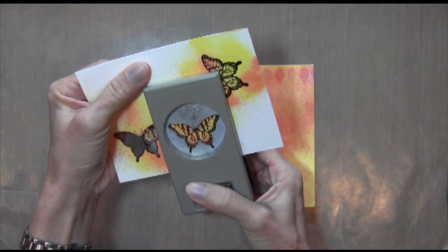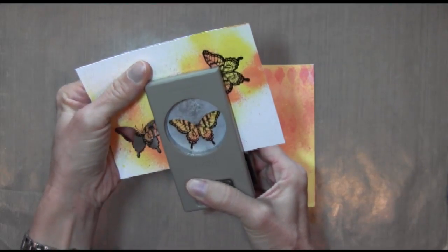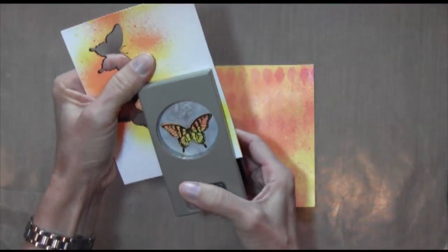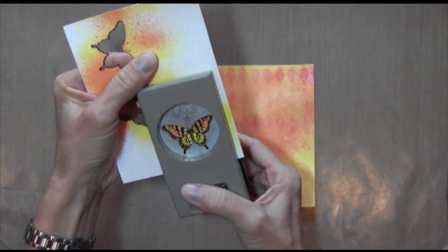There's this matching Stampin' Up punch for this butterfly set, and it's great because the punch goes right up to the black of the butterfly, so you don't have that white outline around it.